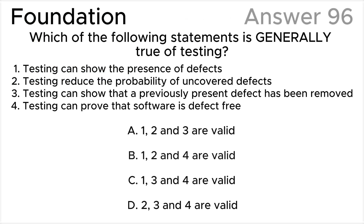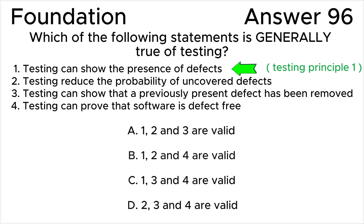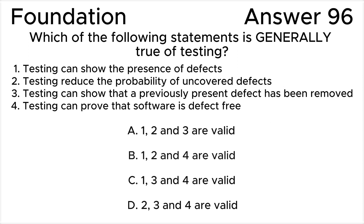Let's look at all the statements from one to four. Statement one is valid — testing is primarily focused on identifying the presence of defects in the software, according to testing principle one in the ISTQB syllabus. Statement two is valid — effective testing helps in reducing the probability of defects going undetected, but it does not eliminate the possibility entirely.